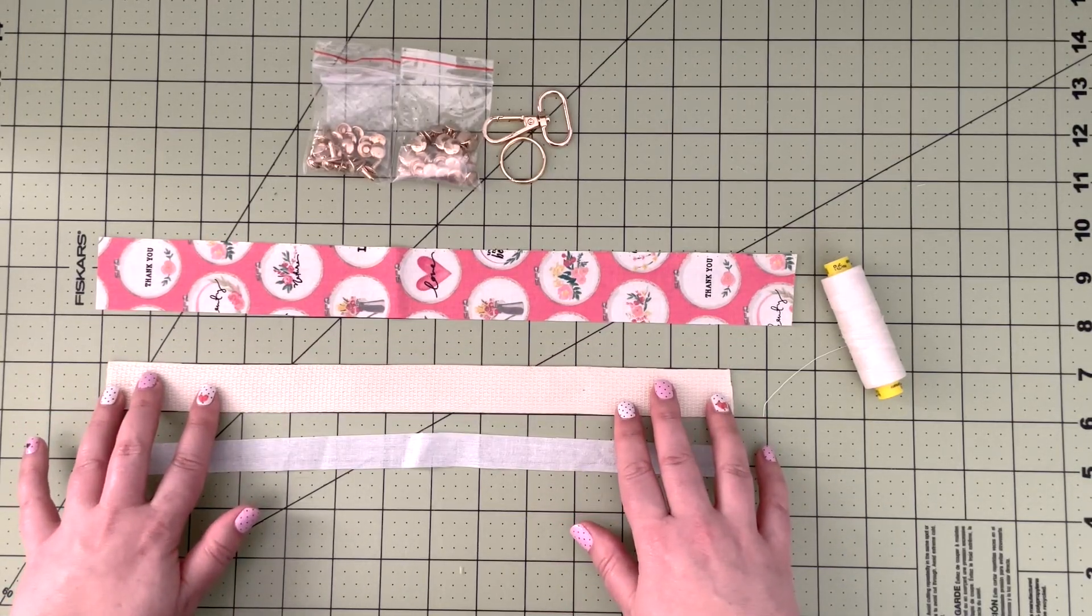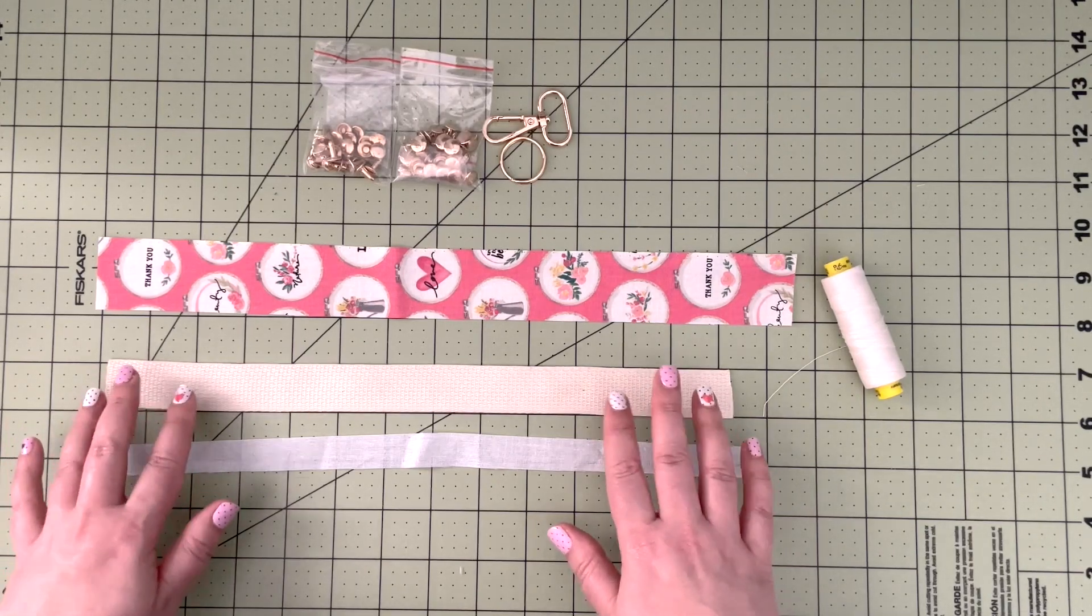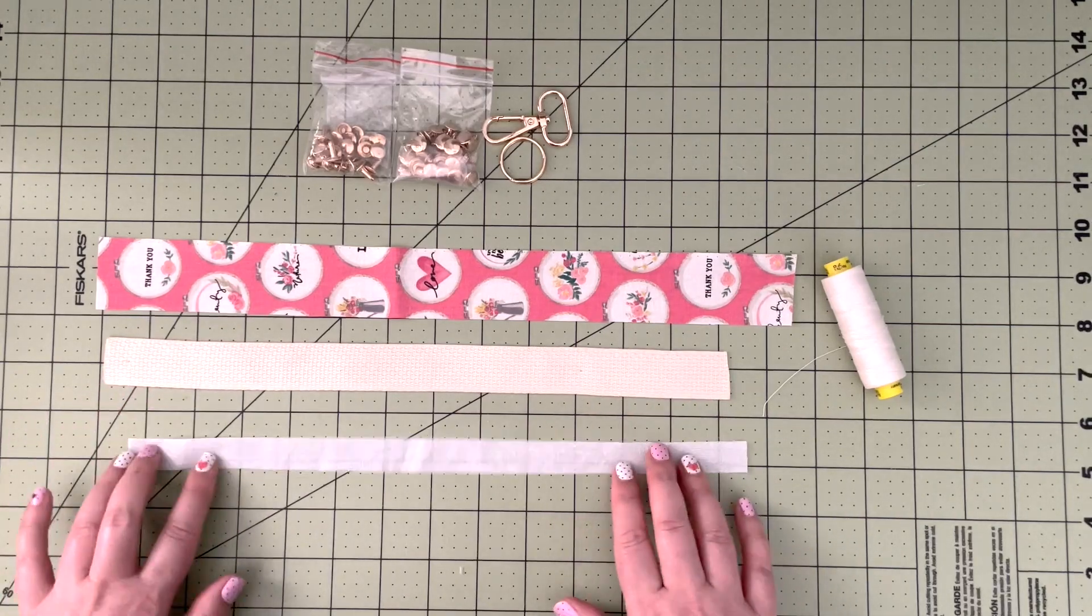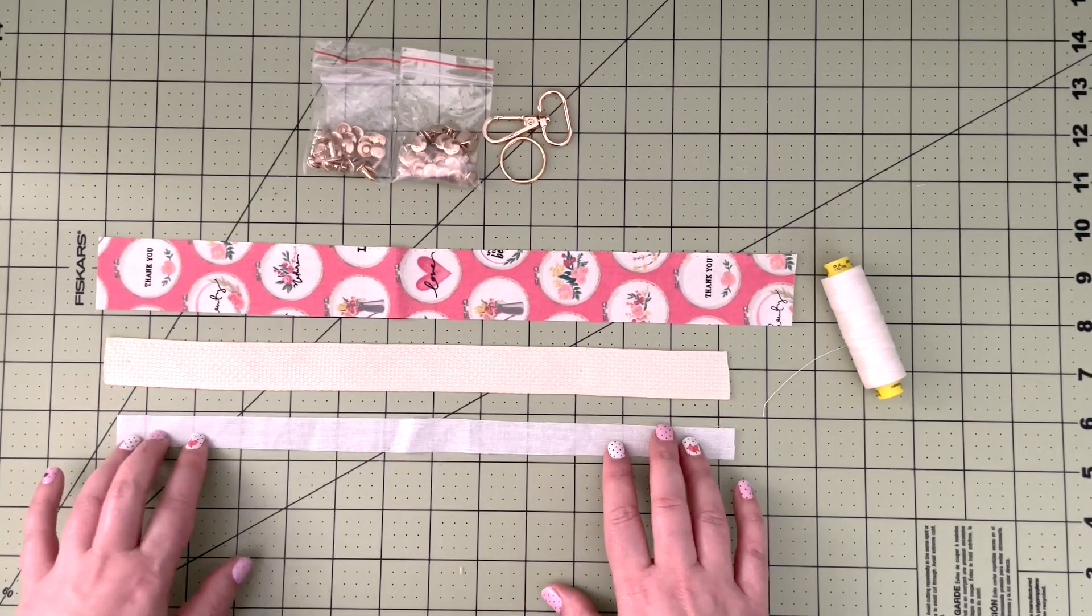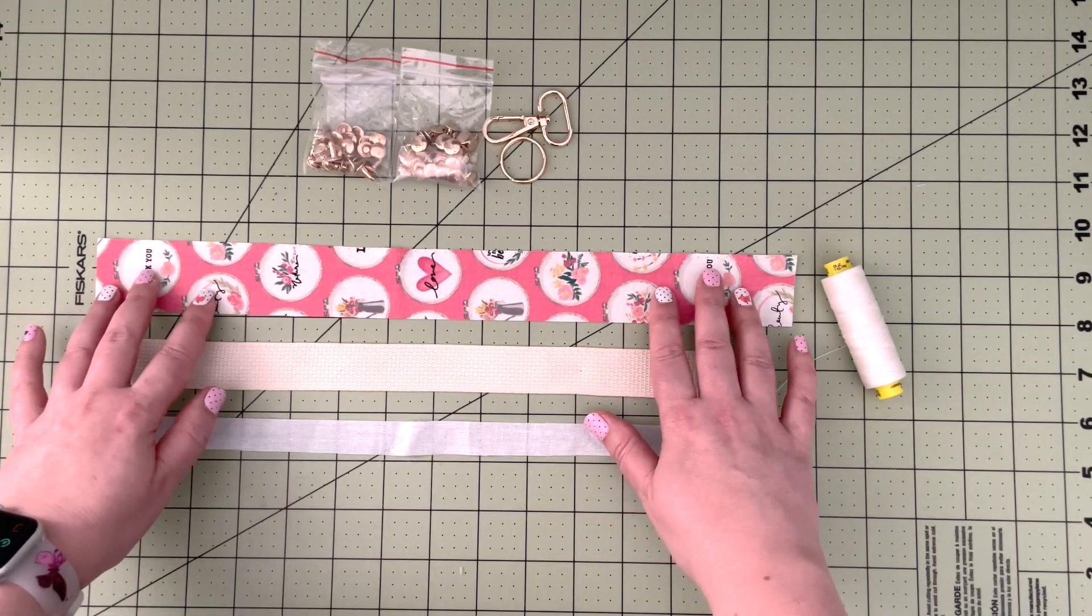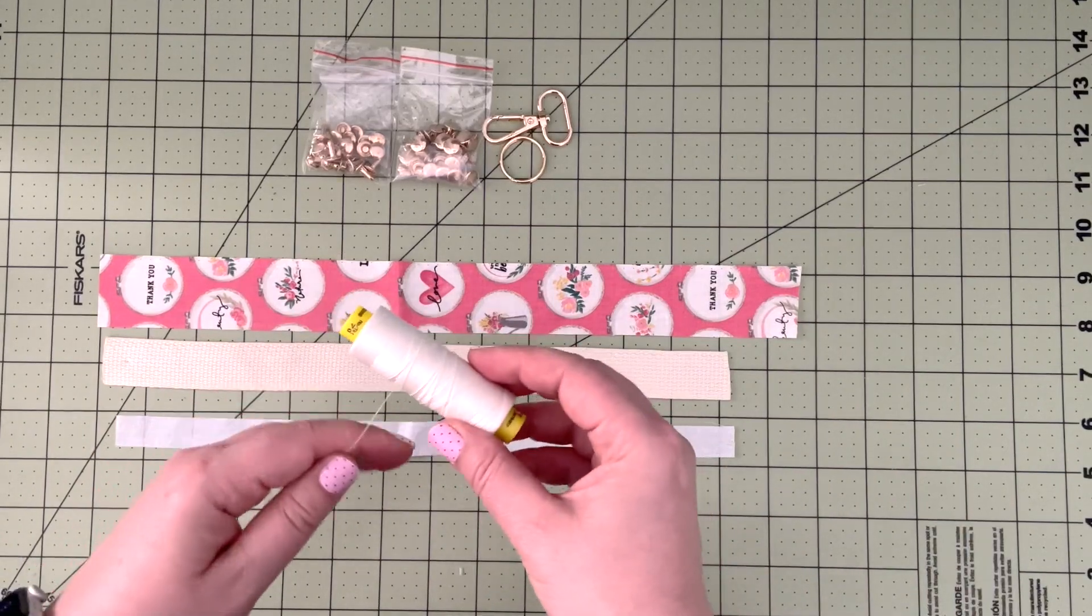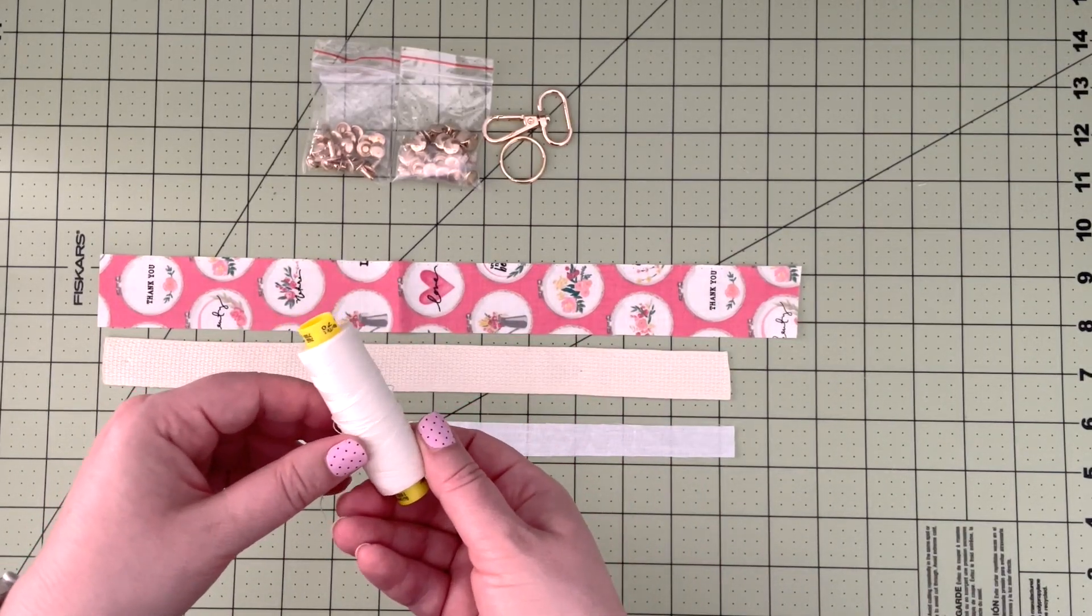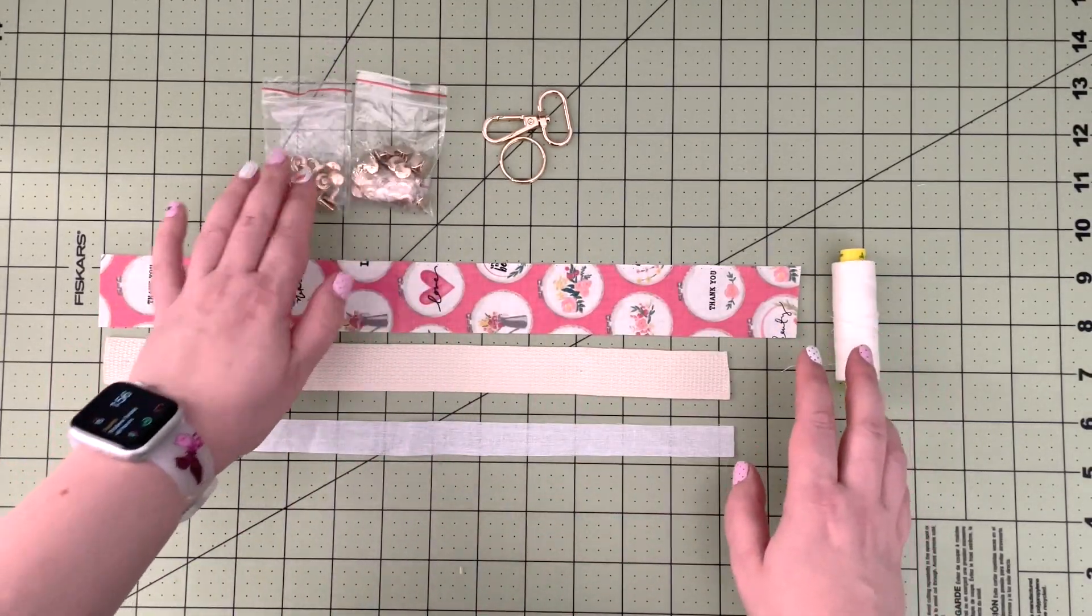Here I'm using a nylon webbing tape that is one inch in width, and all my measurements for all the other supplies are based on the webbing tape. I'm also using a strip of SF 101 to give a little more stability to my quilting cotton. I'm going to be using this polyester thread - this is Gutermann Mara 70. I'm also using two pairs of rivets, a key ring, and a swivel clasp.